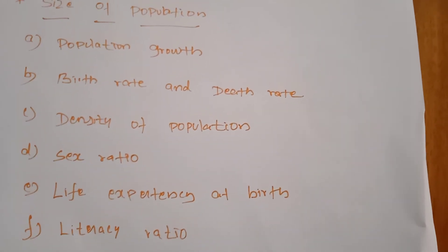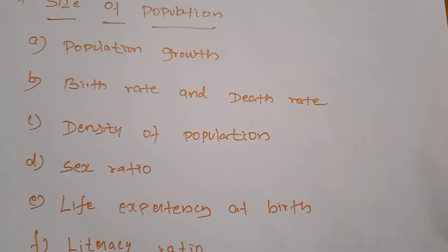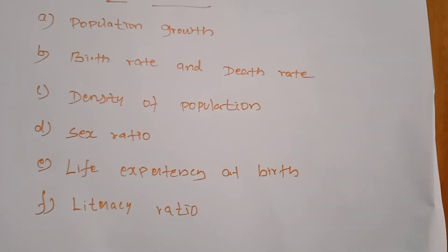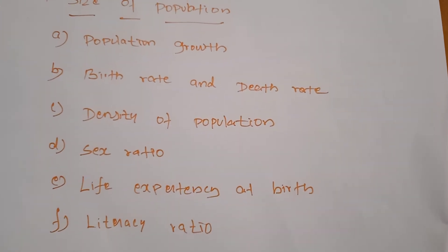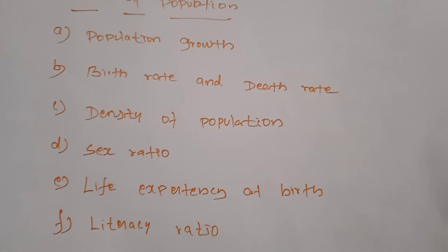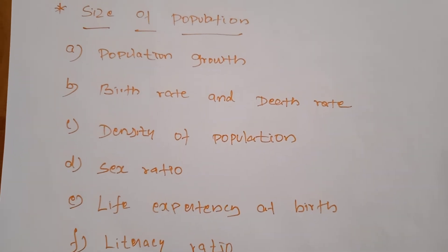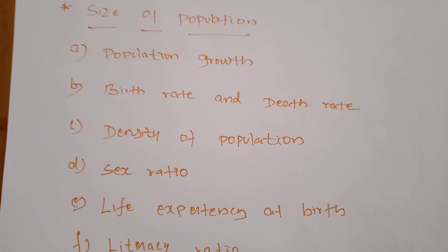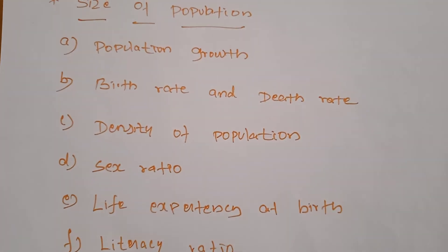Life expectancy at birth refers to the mean expectation of life at birth — approximately how many years a person is expected to live. Life expectancy has improved over the years. Life expectancy is low when the death rate is high or instances of early death are high. On the other hand, life expectancy is high when the death rate is low and instances of early death are low.